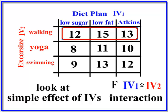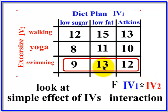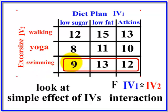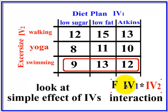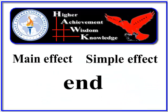I hope that helped. Remember: when there's a significant interaction, you have to switch to the simple effects of the IV, which means looking at one level of one IV across all the other levels of the other IV. When there is no significant interaction between the IVs, you simply look at the main effects.